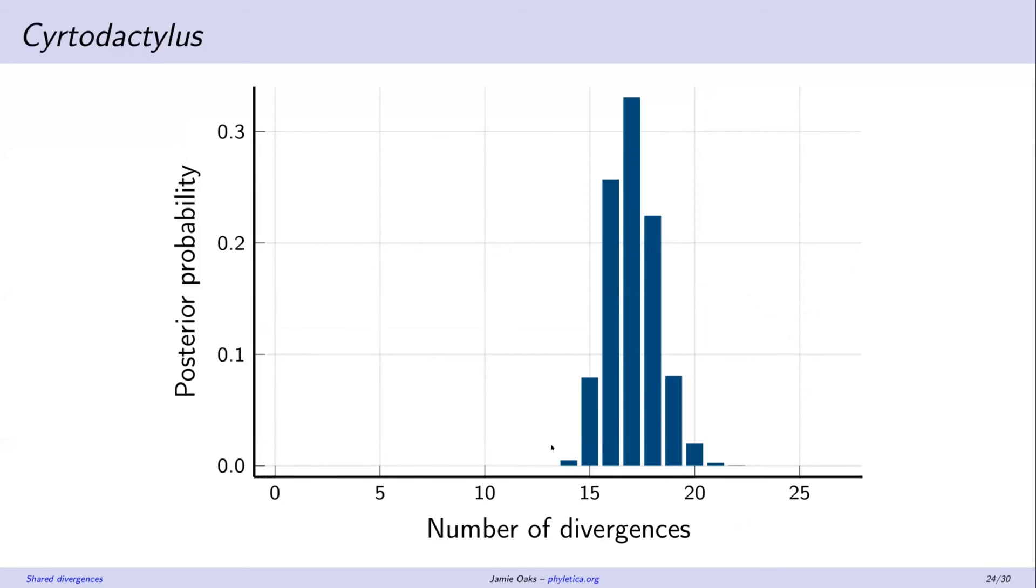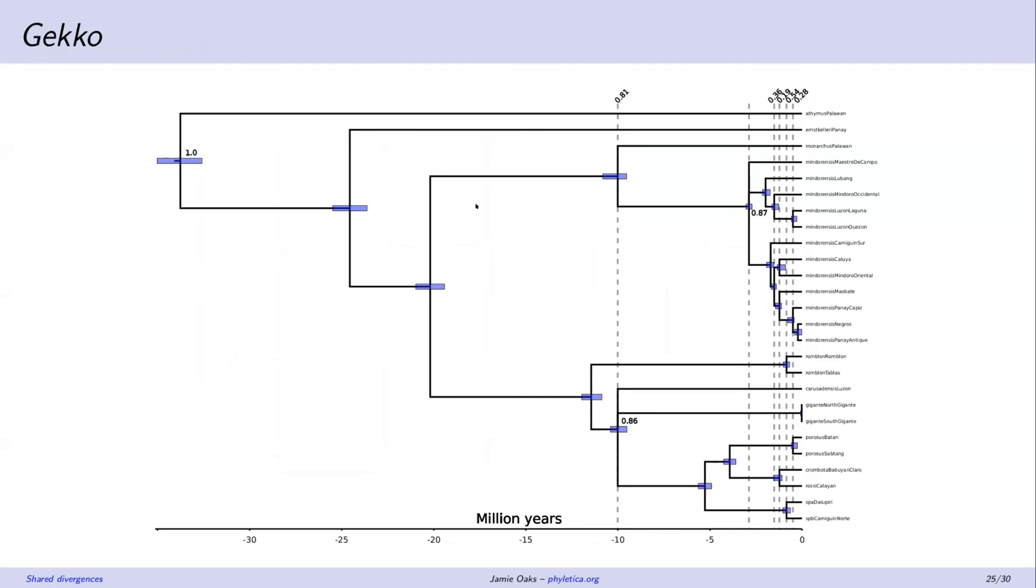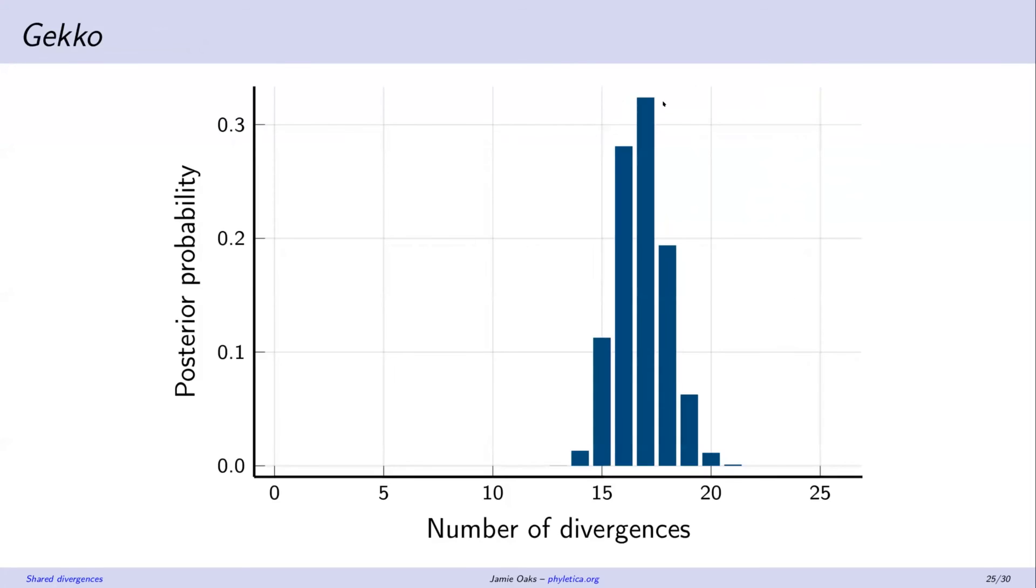All right, and this is just showing a distribution of the number of divergence times. So we're not getting, we're not sampling anything over 21 divergence times and the maximum is 26 in this case. So we're really excluding the current model of independent divergences. And this is just showing the other genus of geckos. Once again, we're finding shared divergences and polytomies. And once again, we're excluding anything, you know, 21 to 25 divergence times. We're excluding the current model of independent divergences.